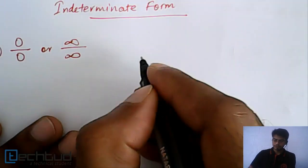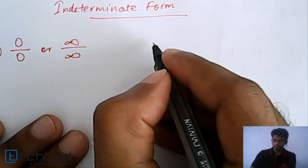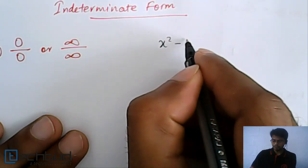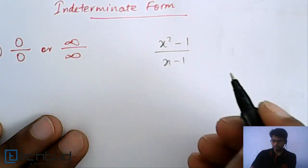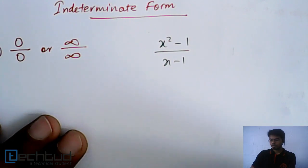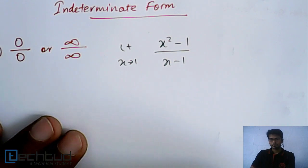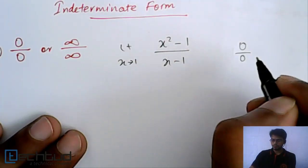So let's take our first example: x square minus 1 upon x minus 1. When limit x tends to 1, this is 0 by 0 form.